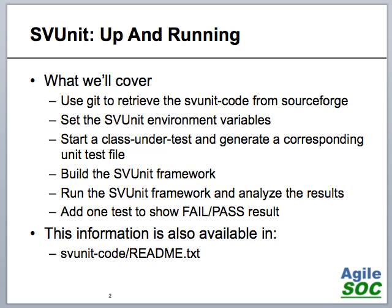First we're going to go to SourceForge and use Git to retrieve the SVUnit code. Then we're going to set up the SVUnit environment variables so we can drive the scripts. Then we're going to start a class under test and generate a corresponding unit test file. From there we're going to build and run the SVUnit framework and take a look at the results. Then we're going to add one failing and one passing test to see what those results look like.